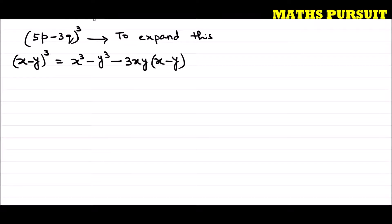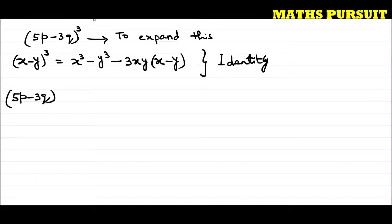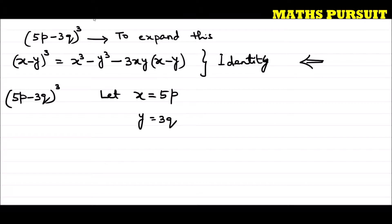We will use this identity to solve the given cube (5p minus 3q) to the power 3. Let x equal to 5p and y equal to 3q. Keeping this in mind, we can easily solve this with the help of this identity.